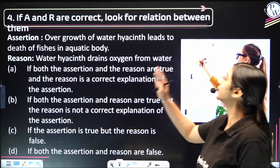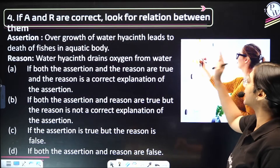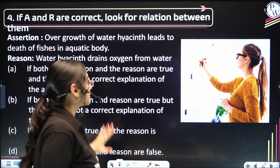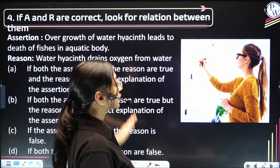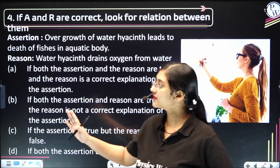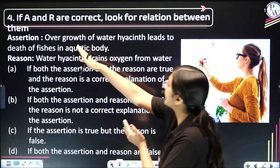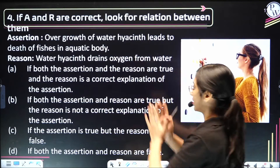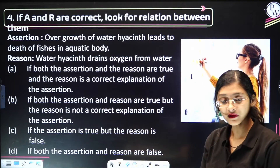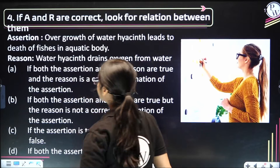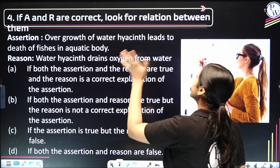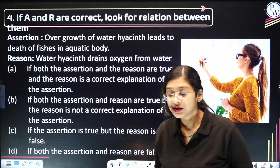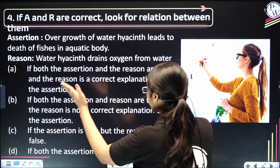There is a question here. The assertion says: 'Overgrowth of water hyacinth leads to death of fishes in the aquatic body.' Before going to the reason, you have to first read this independently and understand whether it is right or wrong. Then go to the reason, which says: 'Water hyacinth drains oxygen from water.' Understand whether that statement is right or wrong.